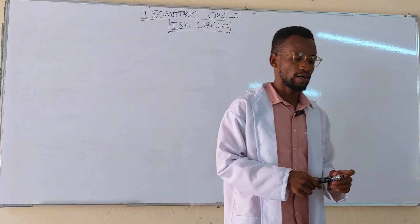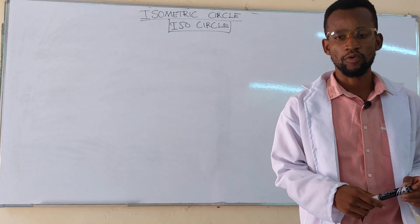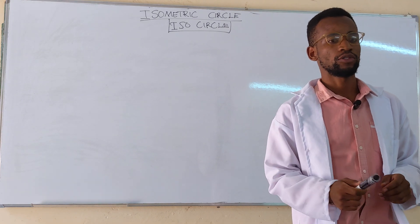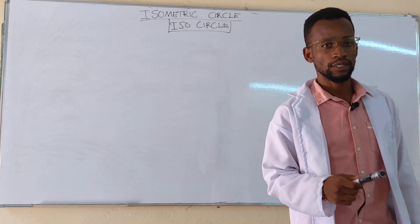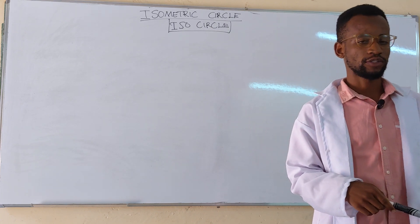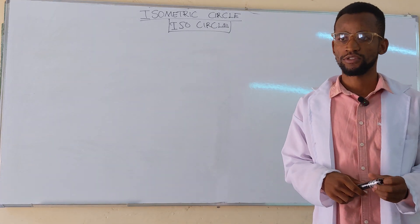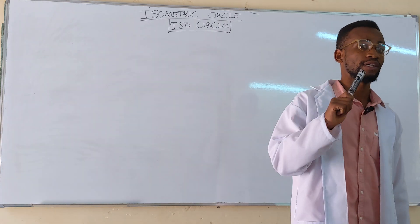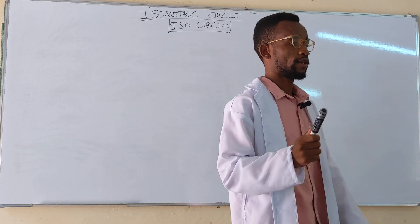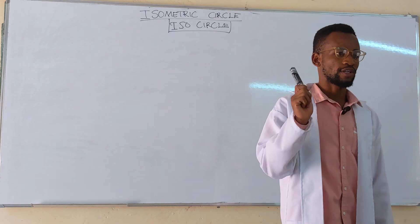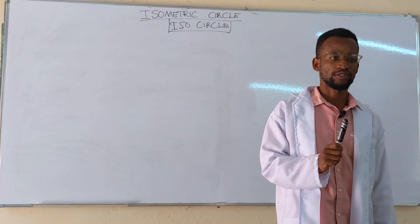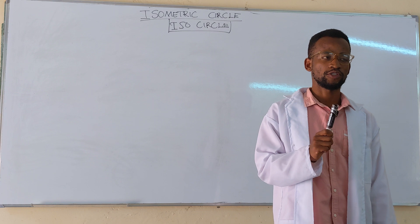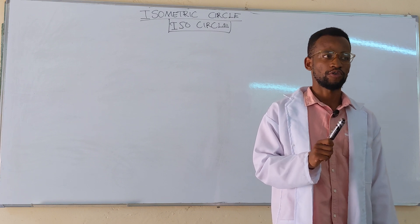Things like cylinders and other circular objects, when representing them on a drawing paper or on a 2D plane, we use what are known as isometric circles or isocircles. These isocircles are always drawn inside a box — an isometric box or what is known as a rhombus.